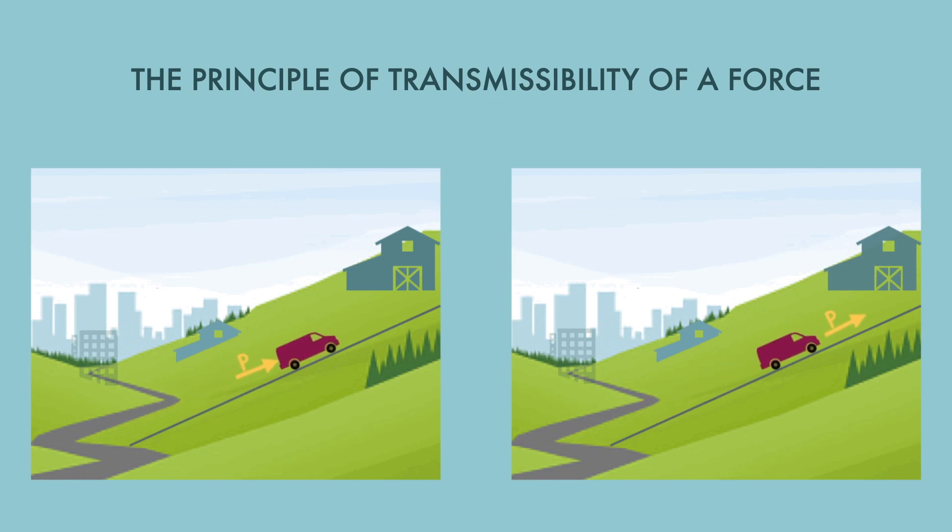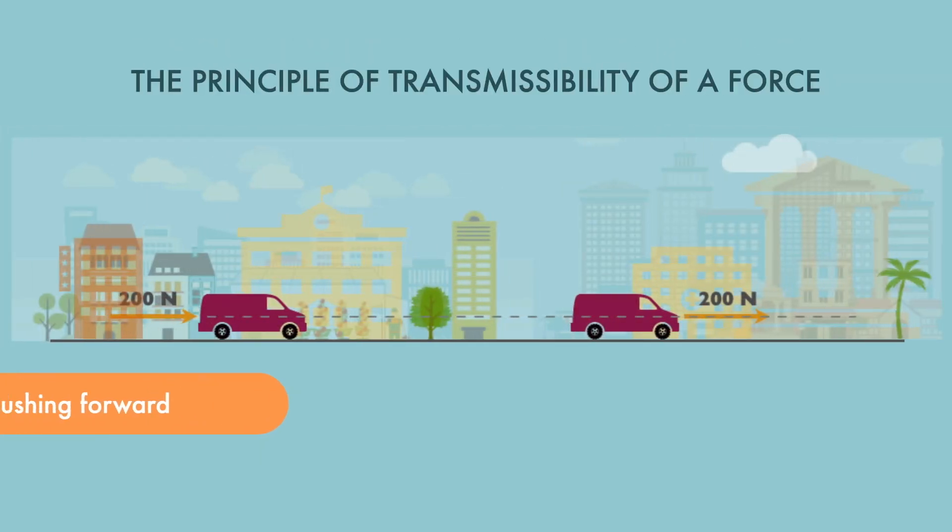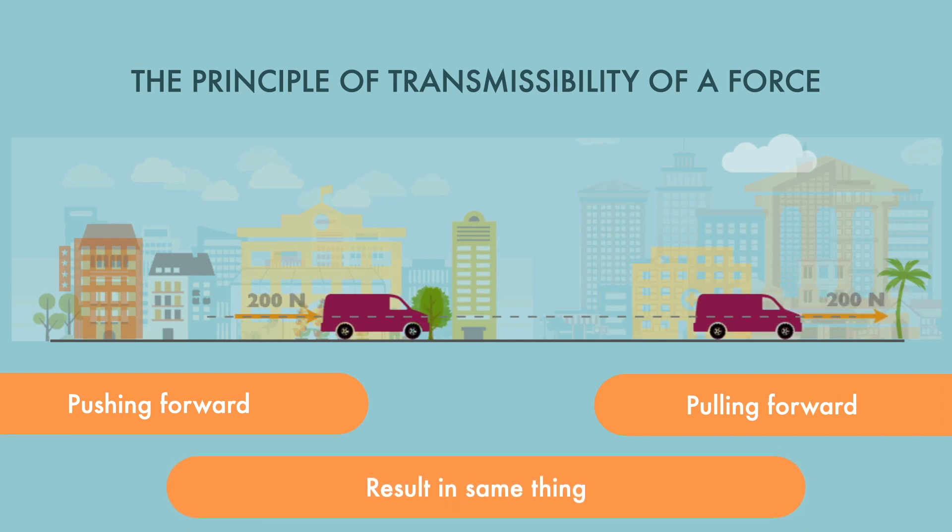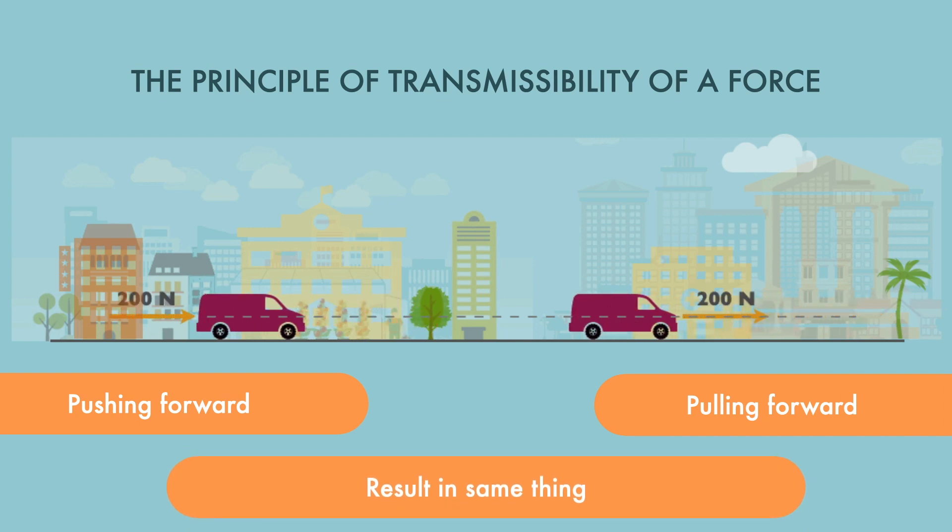Both the pushing and pulling will produce the same result or consequence, if the force applied in the two cases has the same line of action. To put it another way, pushing or pulling a car forward with the same force P, which has the same line of action in both cases and in the same direction produces the same consequences.